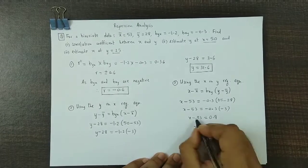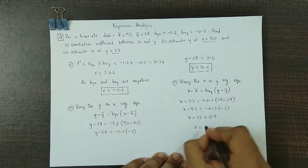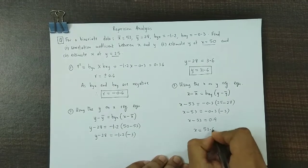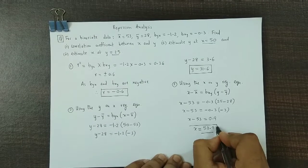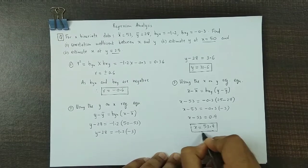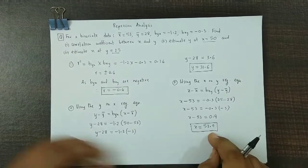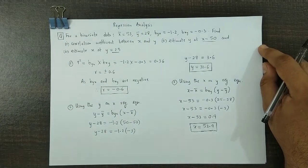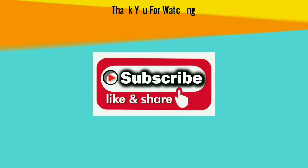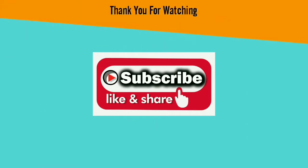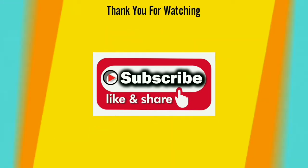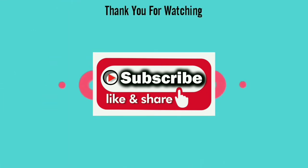Finally, we have x equal to 53 plus 0.9, that is 53.9. This is how you obtain the value for x at y equal to 25. Like it, share it, and subscribe to our channel for more such interesting videos. Thank you.